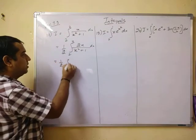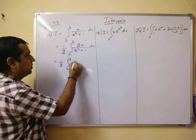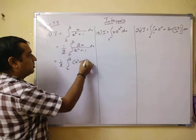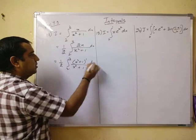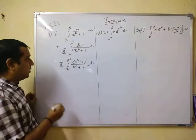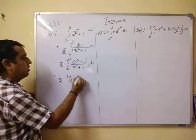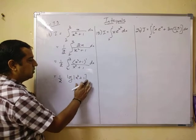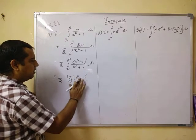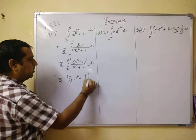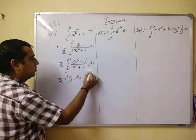Now we can write this as 2 to 3, x square plus 1 dash upon x square plus 1 dx. Now you can apply our formula. This gives you 1 by 2 log mod x square plus 1, log mod x square plus 1 within limits 2 to 3.